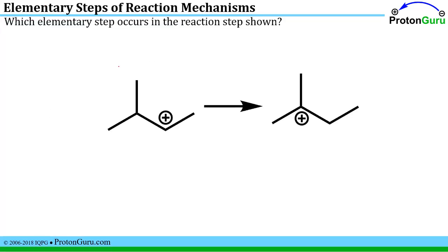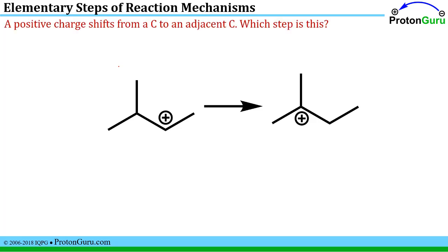Here's a case where it looks like very little is happening, but if you think about what's really happening here, you're moving a positive charge from this carbon over to this adjacent carbon, and in order to accomplish that, you're going to have to move one of the hydrogens from this site over to that site beside it. If all that's happening is a rearrangement of the positive charge from one carbon to an adjacent carbon, that's a carbocation rearrangement. It's a very important step in many organic reactions you'll see throughout your course.